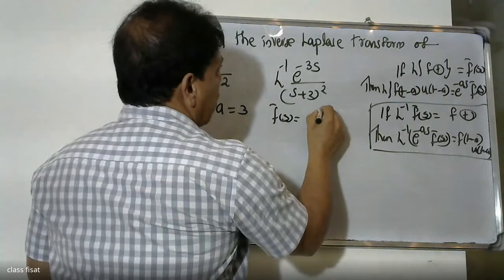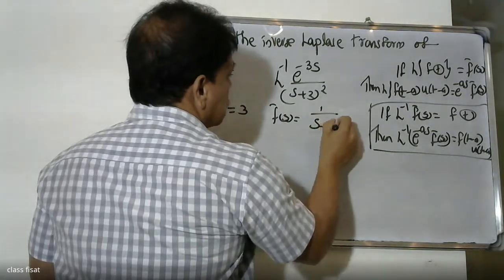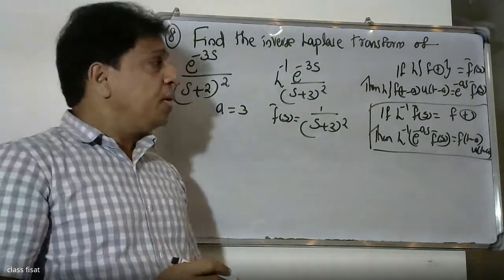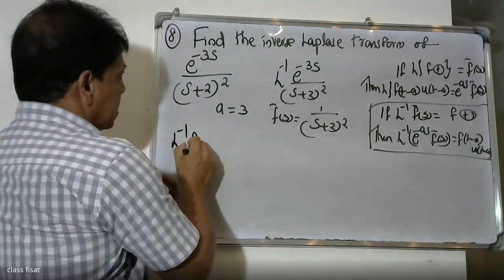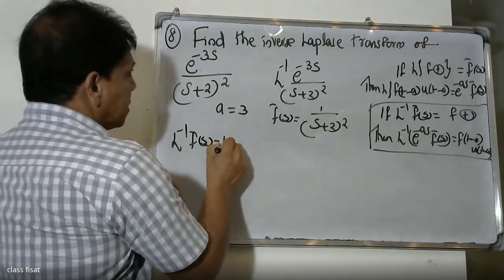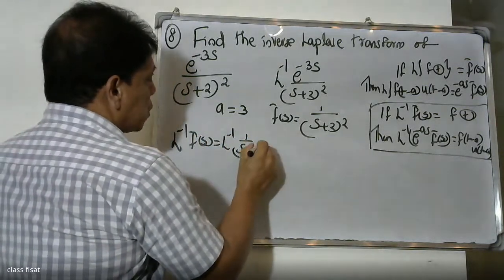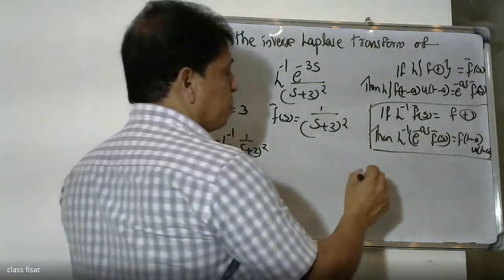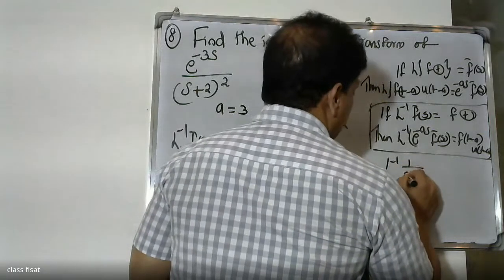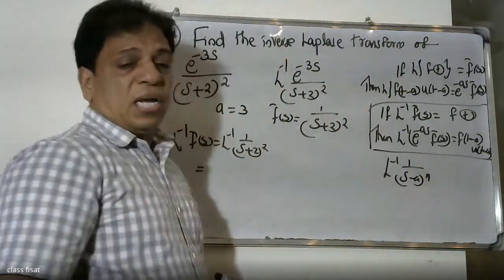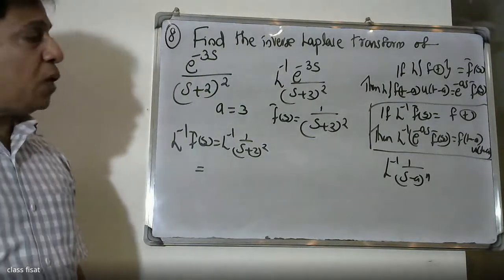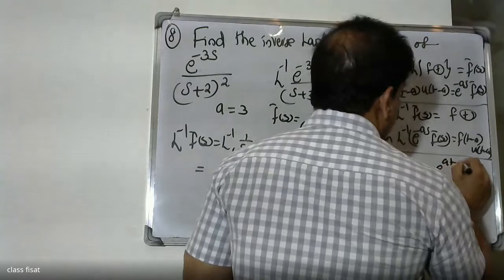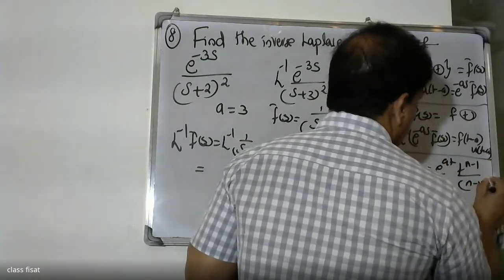So F̄(s) is 1 by (s plus 2) squared. Now using the formula: L inverse of 1 by (s minus A) raised to N equals t raised to N minus 1 divided by (N minus 1) factorial. For (s plus A): L inverse of 1 by (s plus A) raised to N equals e raised to minus AT times t raised to N minus 1 by (N minus 1) factorial.